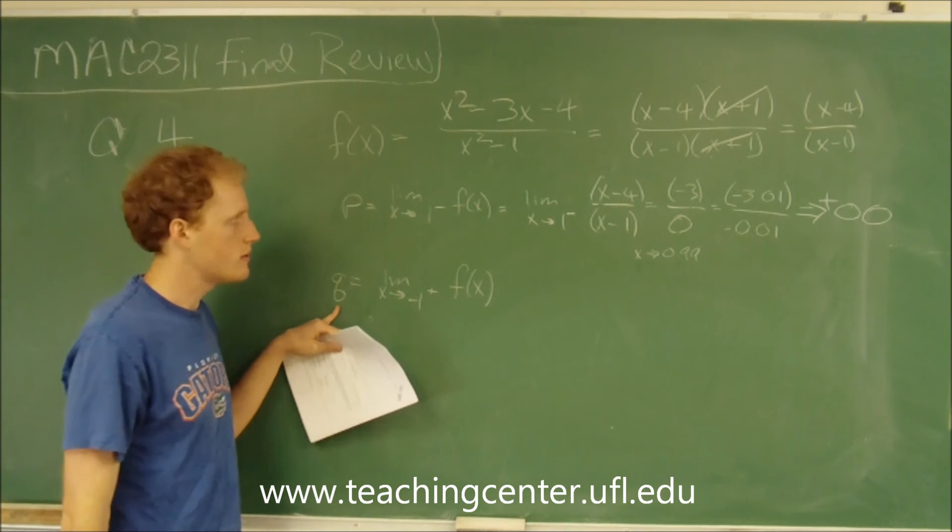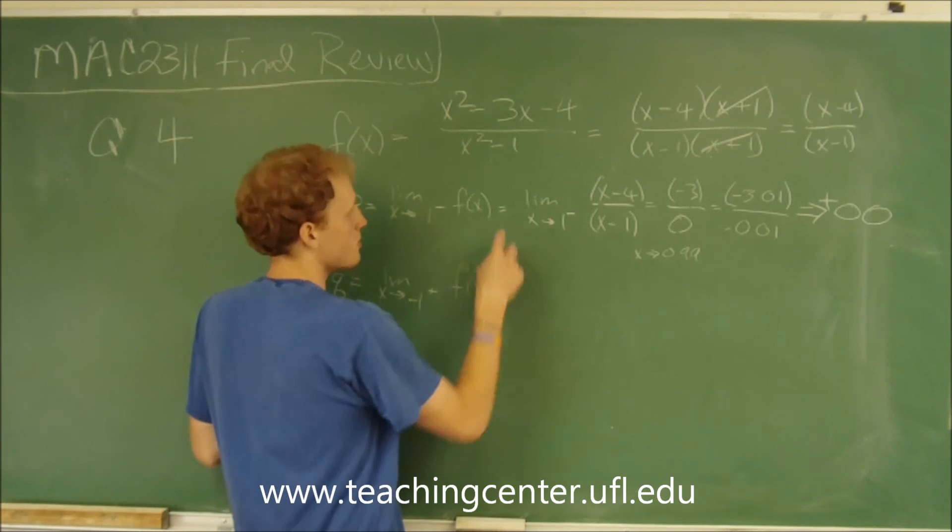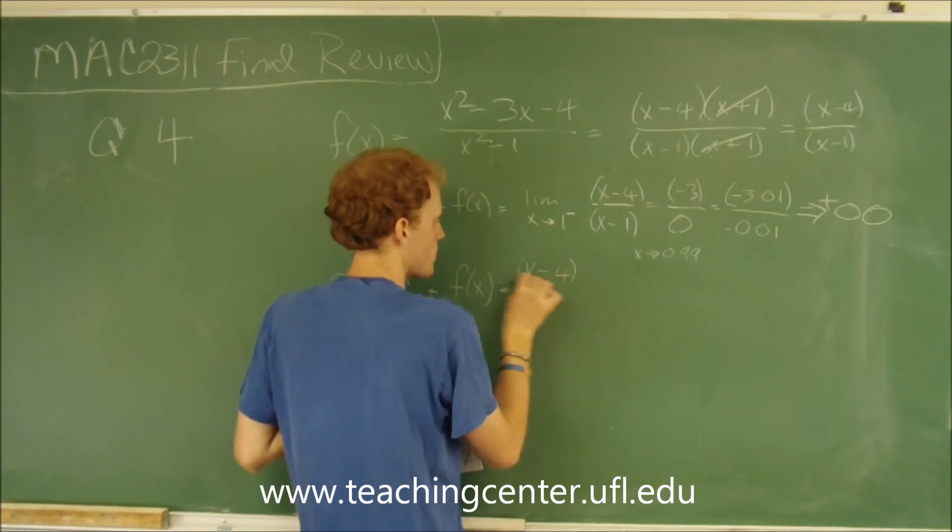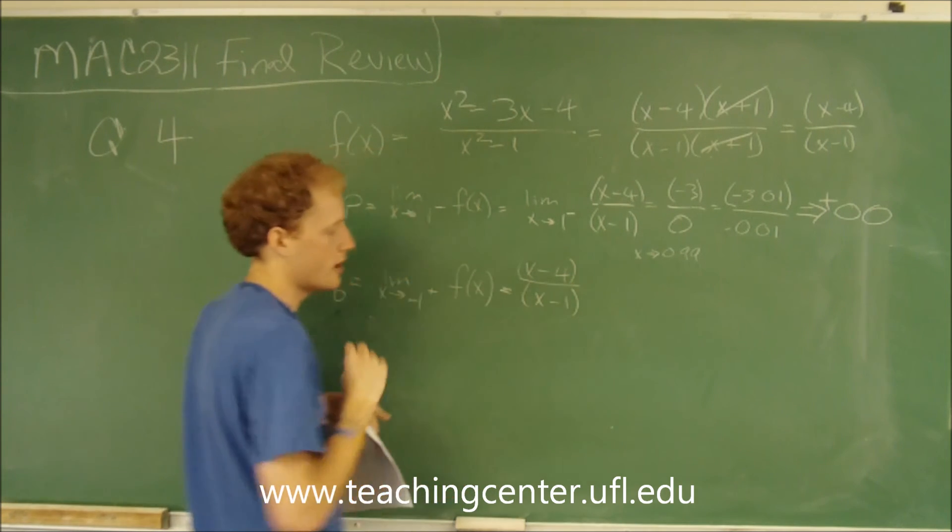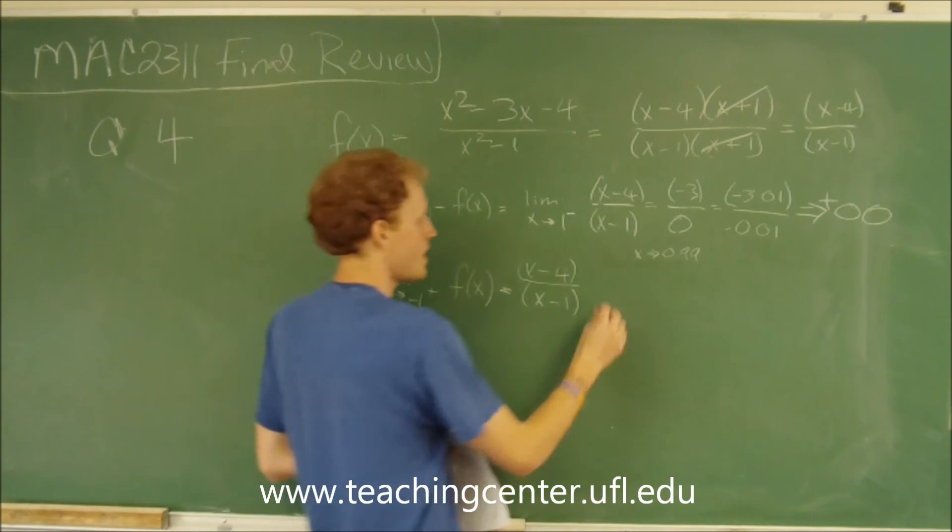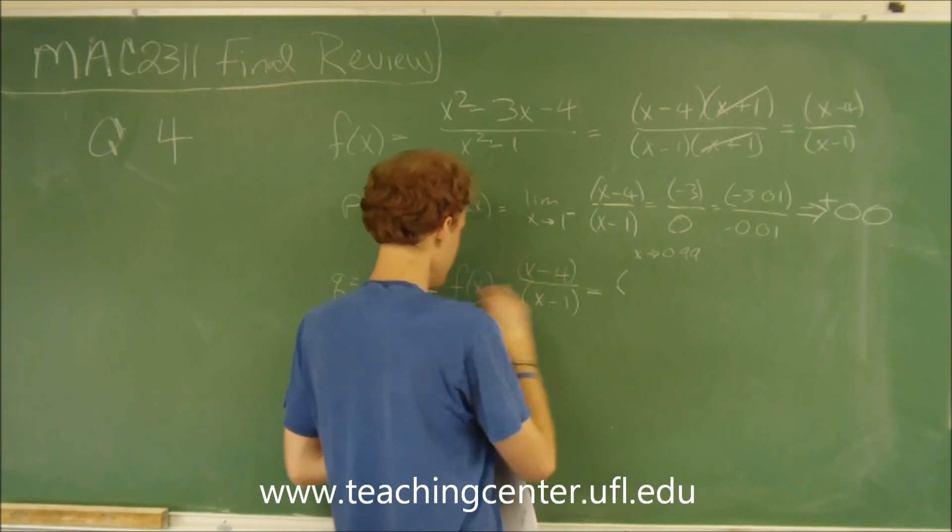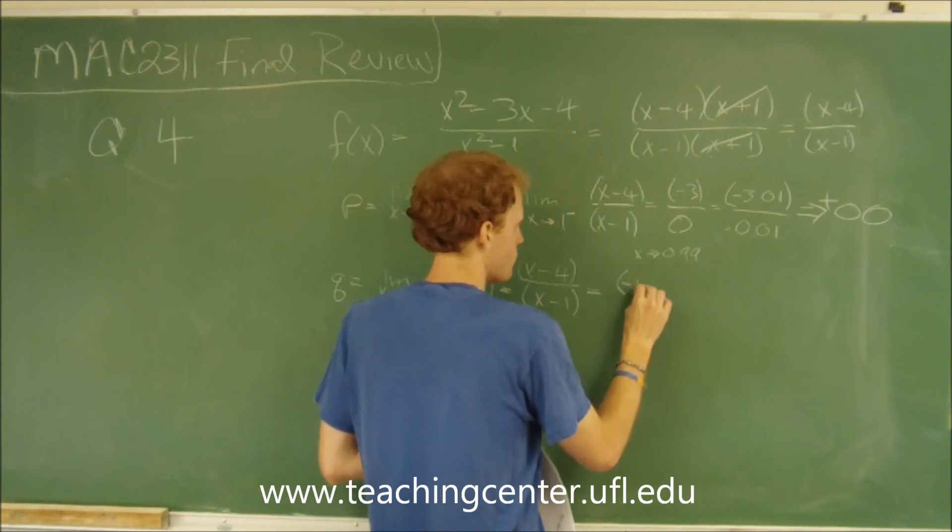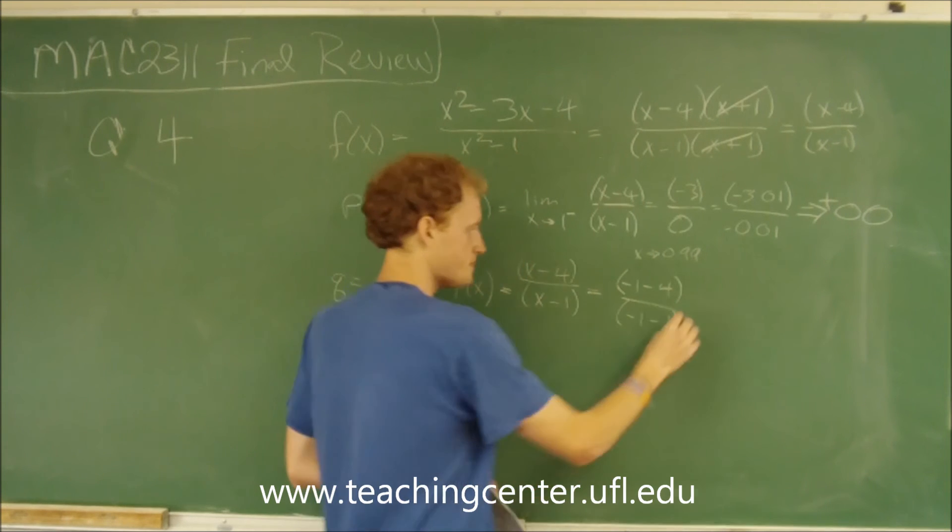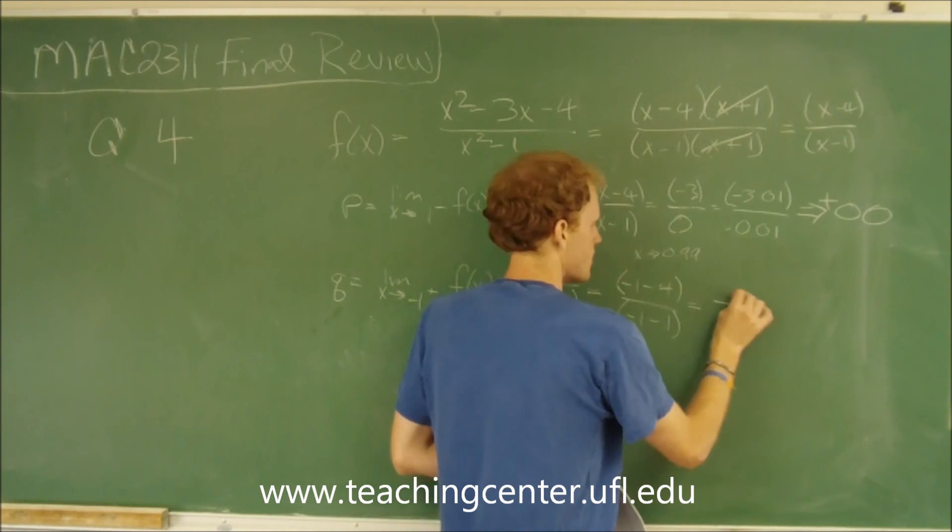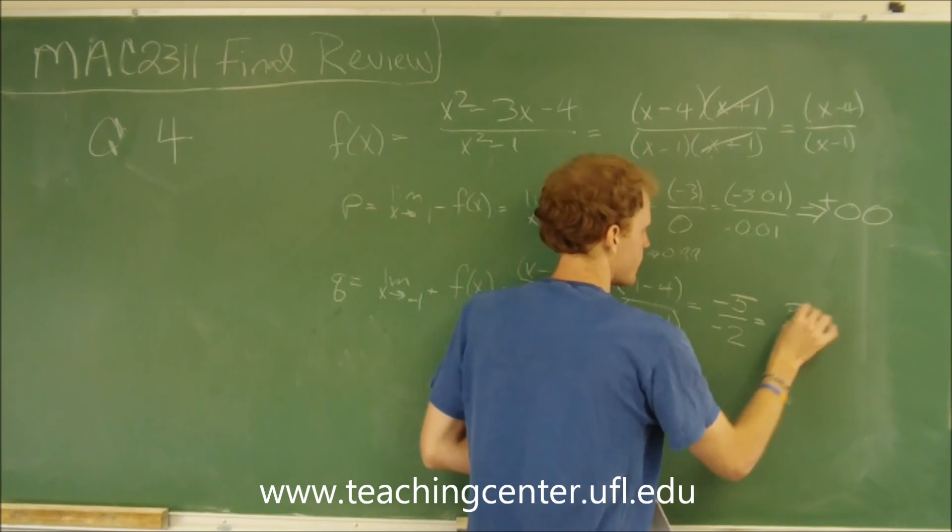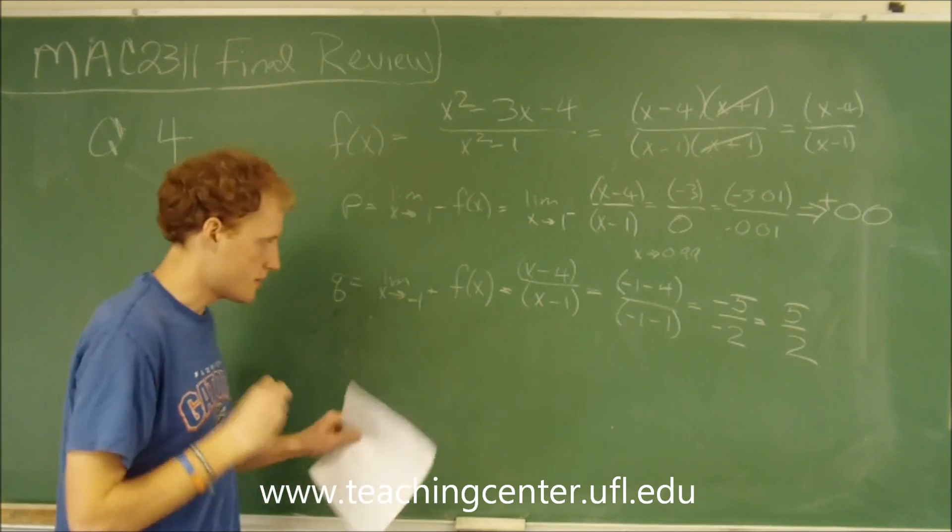We apply the same thing for q. We still have f(x) equaling x minus 4 over x minus 1. If we plug in negative 1, let's see what that does. We're going to get negative 1 minus 4 over negative 1 minus 1, which is negative 5 over negative 2 equals 5 half.